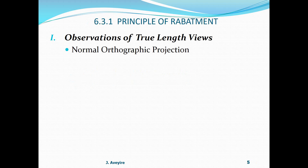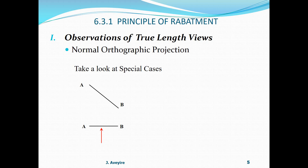Observations of true length views. Let's take a look at normal orthographic projections and special cases. Here we have two views — the front view and the top view of a line AB. Performing a projection from the top view where the projector is perpendicular to line AB in the top view, the front view gives us a true length. In a second example with a right side view and a left side view of line AB, performing a projection on the front side view where the projector is again perpendicular to line AB, the left side view is a true length.